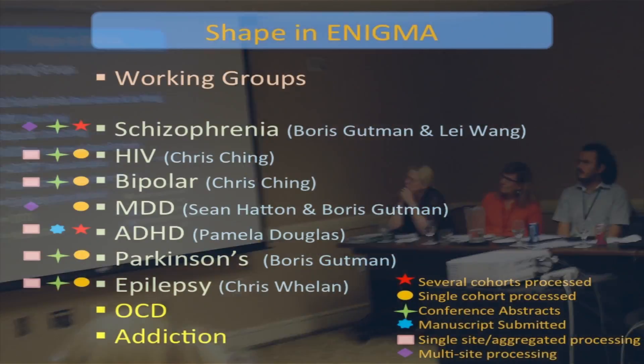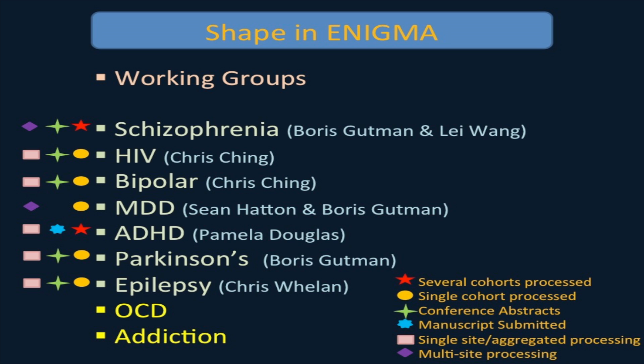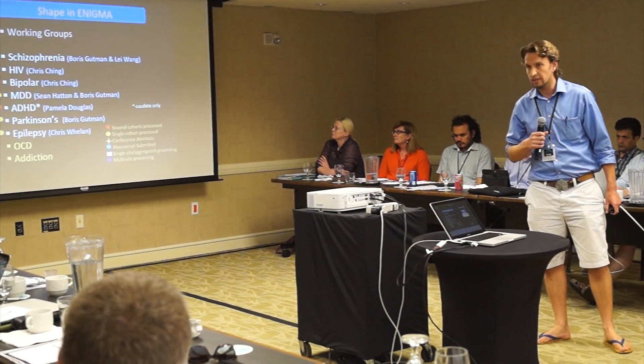This is shape in ENIGMA so far — though this slide may be a bit optimistic in some respects. A number of groups have data already processed with the pipeline we're handing out. Only one is just about to submit a manuscript, but almost all of them have at least an abstract. The schizophrenia group is probably farthest along, with about eight cohorts processed at four different sites. Sean Hatton from Sydney is helping with MDD. ADHD, Parkinson's, and epilepsy all have results at this point.